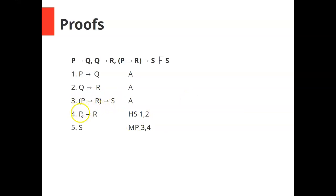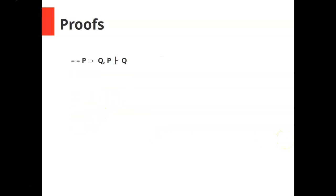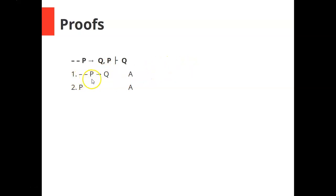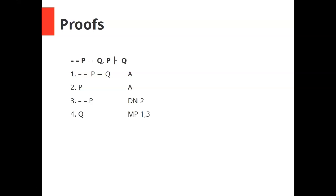Here's another example. We have a conditional and a simple sentence, and we're trying to end up with Q. Q is the consequent of a conditional, so we're probably using modus ponens. To use modus ponens we need the antecedent, which is not-not-P. We have P, so by double negation from line two we can get not-not-P on line three. Then we use modus ponens from lines one and three — a conditional and its antecedent — to infer the consequent Q on line four. That's a quick four-line proof.